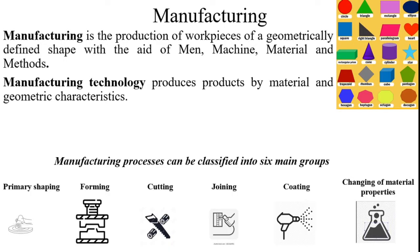Before we go into the casting processes, casting is one of the manufacturing processes, so we should understand what is a manufacturing process. Manufacturing is the production of workpieces of a geometrically defined shape with the aid of men, machine, material and methods. Geometrical shapes include circle, triangle, rectangle, ellipse, and many others available in engineering, produced with the aid of processes known as manufacturing processes.